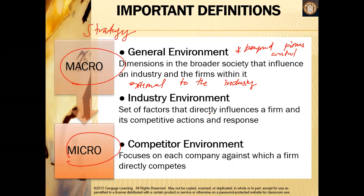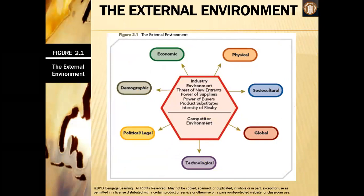Among all the factors, these are the ones you cannot control — they are inherent in your environment. When you talk about the industry, this is a group of firms that produce similar goods or services — they are part of your competitor environment. Your competitive environment refers to factors that pertain to an industry and affect the firm's strategy, meaning there is direct competition under your competitor environment.